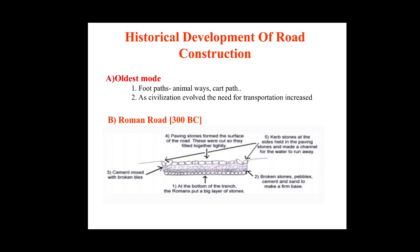The oldest mode of transportation known were the footpaths. Animal-driven cars were more popular in the olden days, and this brought the need for the development of a hard surface for the movement of these animal-driven vehicles. The first road on which there was some authentic record was in the Assyrian Empire, constructed around 1900 BC.